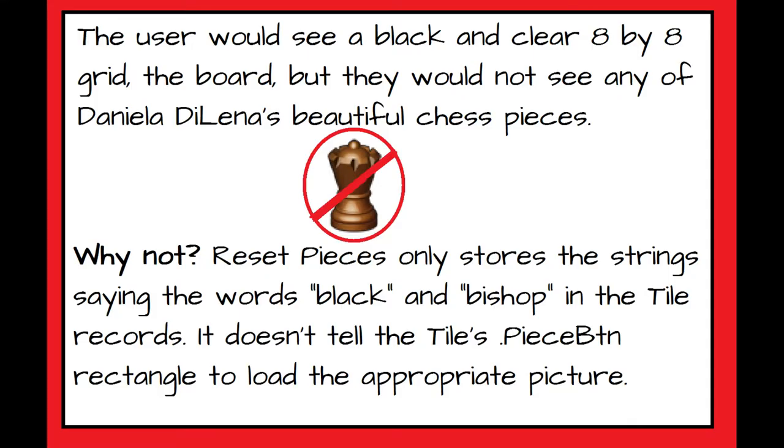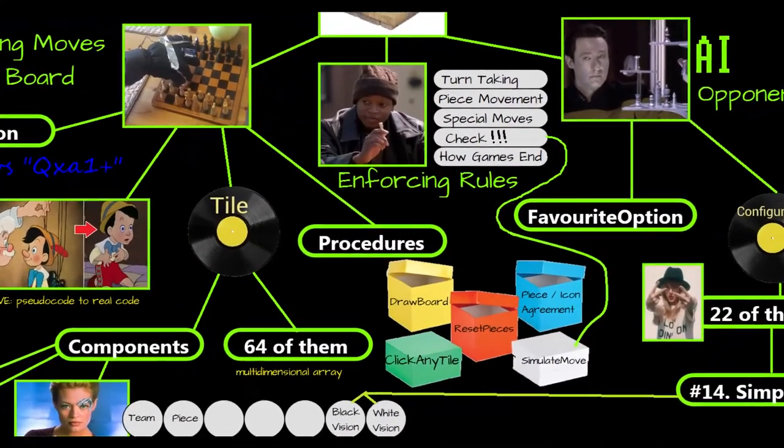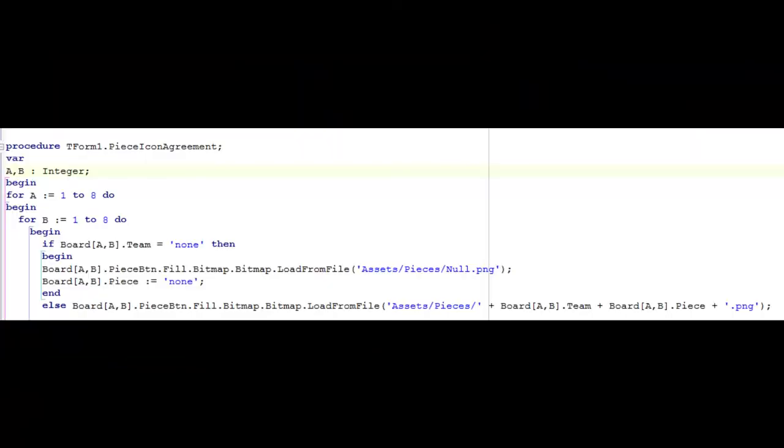The answer is that the user would see a black and clear 8x8 grid, the board, but they would not see any of Danielle Delena's beautiful chess pieces. Why not? Reset Pieces only stores the strings that say black and bishop in the tile records. It doesn't tell the tile's dot piece button rectangle to load the appropriate picture. I named the procedure that does that Piece Icon Agreement. Again, we have a two-loop structure. If this tile does not have a white or a black piece in it, fill the piece button rectangle with a bitmap found in the assets folder and the pieces subfolder named null.png. It's a picture of nothing. Why load a picture of nothing instead of setting the rectangle to invisible? It's a personal preference.